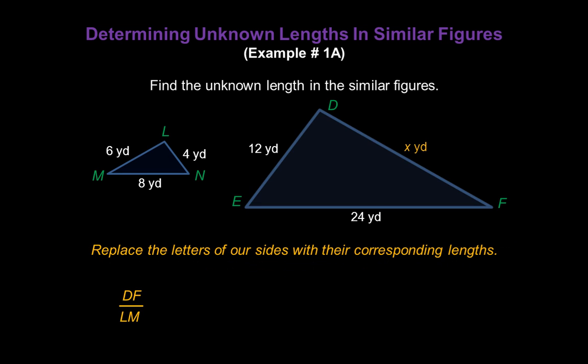Now let's replace the letters of our sides with their corresponding lengths. The length of DF is unknown, but I can replace DF with our variable X. And the length of LM is 6 yards. So I'll replace LM with the number 6.